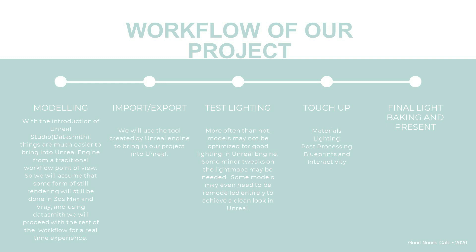We bring in the furnishings and furniture — all the 3D models — and start designing. We won't be focusing on materials yet; we'll just be placing all our 3D models and then import into Unreal Engine again. That's when we focus on materials, lighting, post-processing, and if you want to add blueprints and interactivity, this is the time. Once we have a final Unreal Engine project we're happy with, we crank up the light settings and do a final light bake, so the really nice soft shadows and contact shadows appear — and that's when I'm happy to present it to our customers.